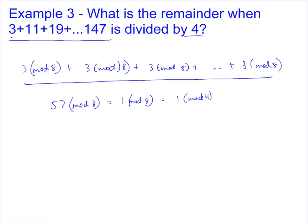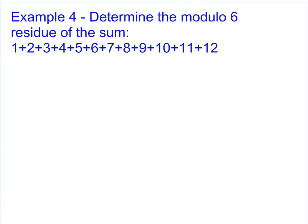Determine the modular six residue of the sum one plus two plus three plus four plus five plus six plus seven plus eight plus nine plus ten plus eleven. Think about each term mod six: six is zero, one plus five is zero mod six, two plus four is zero mod six, three plus nine is zero mod six, and seven plus eleven is one plus five mod six which is also zero. So the modular six residue of the entire sum is zero, meaning the sum is a multiple of six.